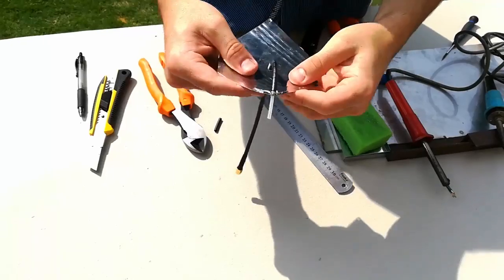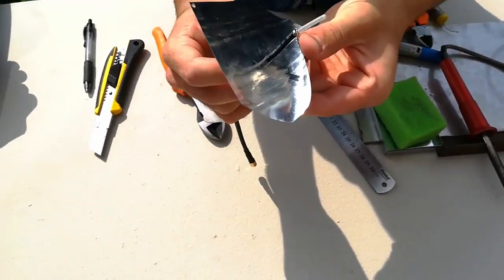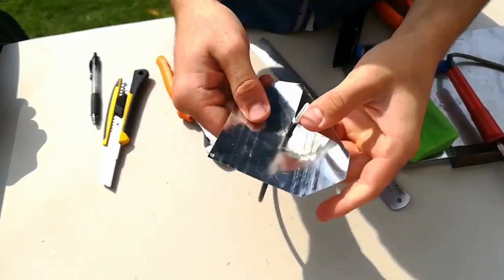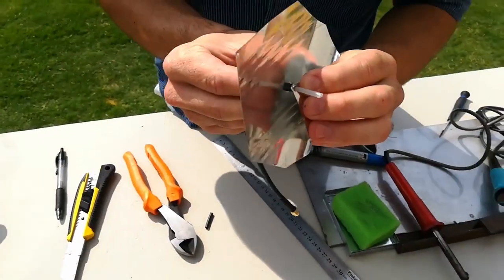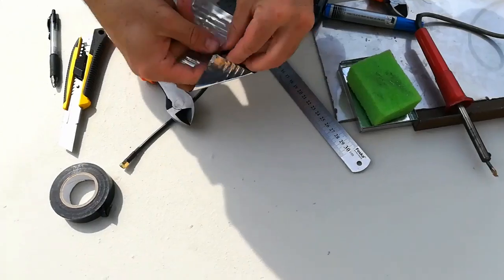Fold that tip gently toward the center of the bowtie. I found that the sooner this is done after soldering, the easier it is because of the heat of the plate. Apply a small amount of tape around the cable between the ground plate and the newly made fold to isolate these two surfaces from each other.